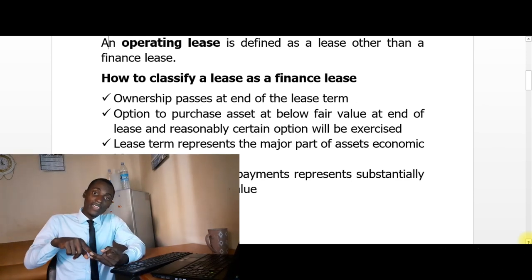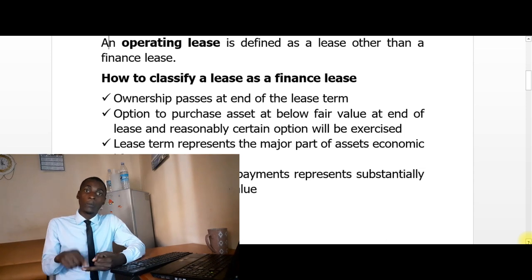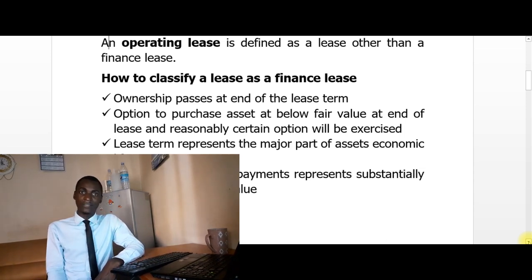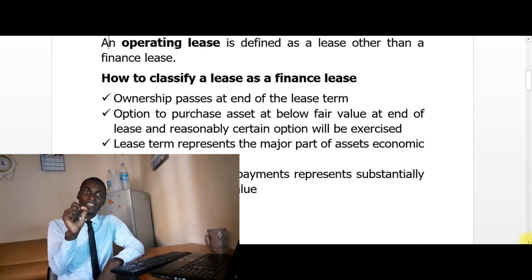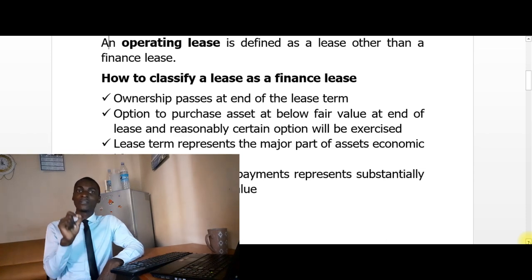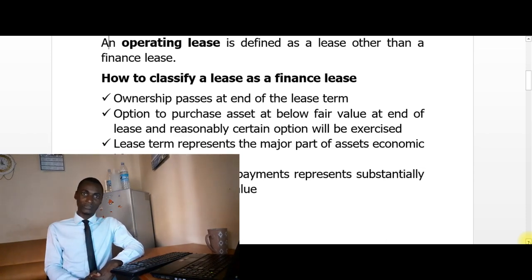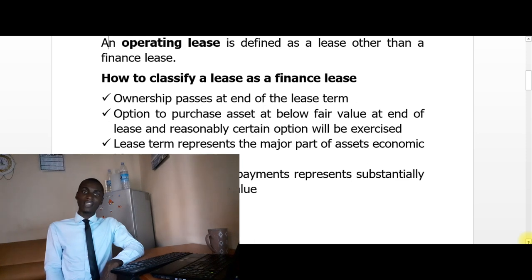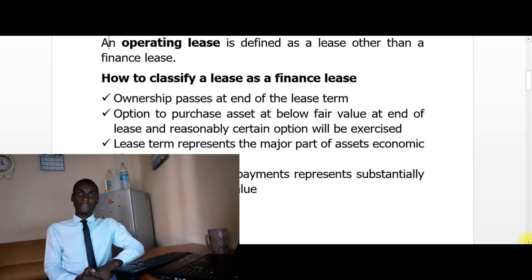A second indicator is that there is an option to purchase the asset by the lessee at the end of the term, but this option is likely to be exercised at a value below the fair value of the asset at the date of exercising the option. If that option exists, it is an indicator of a finance lease.